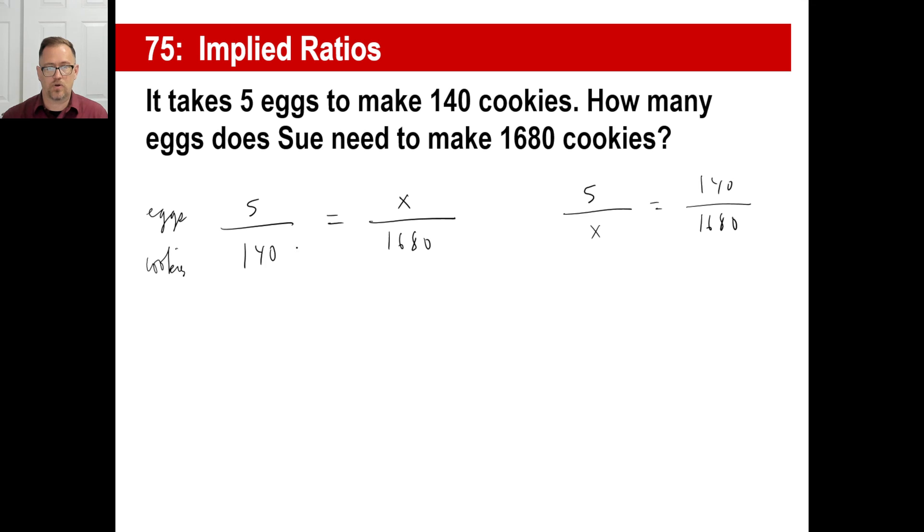Okay, so let's cross-multiply. 140 times X is 5 times 1,680. That'll be 8,400. And, then, what I would do if I were you is just go, okay, I'm chopping off a zero here. And, that's going to be 14 into 840. And, again, these are going to be contrived for you to have nice integer answers 99% of the time. And, the answer here is going to be 60. That's how many eggs she needs.